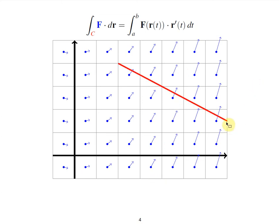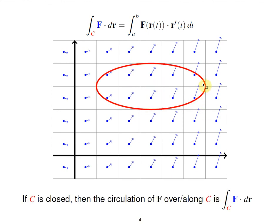On the other hand, if you travel along a path C where, for the most part, the blue vector and the purple tangent vector are basically perpendicular, then you're just going to get products of zero. If you computed this line integral of a vector field along this path for this blue vector field, you'd get a number really close to zero — whether you travel one way or the other — because of the perpendicularity. You can do the same thing over a closed curve.